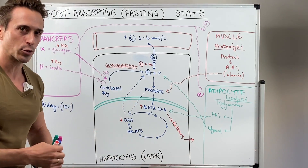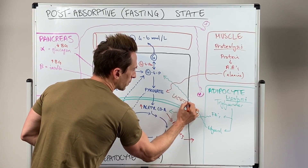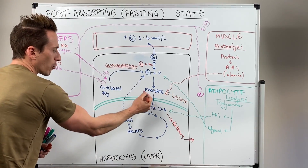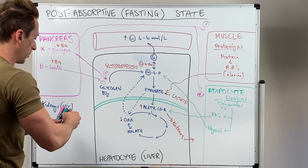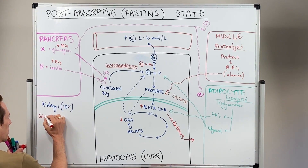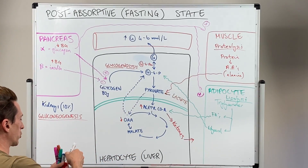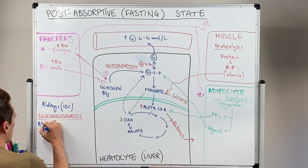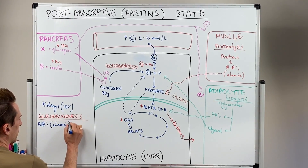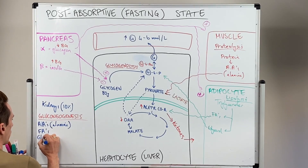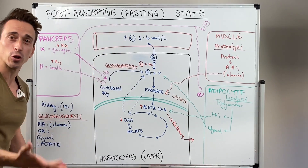Something else — lactate. We can use lactate as a substrate in this process. Lactate can come in and turn into pyruvate, and again pyruvate turns into oxaloacetate, which turns into glucose. So this process called gluconeogenesis takes all of these non-carbohydrate-based sources — amino acids like alanine, fatty acids, glycerol, and lactate — and utilizes them to produce glucose, increasing blood glucose levels.